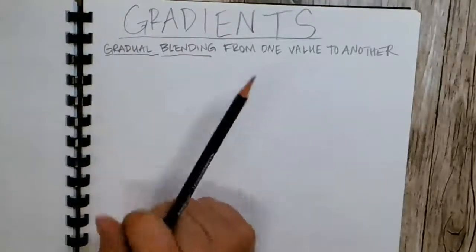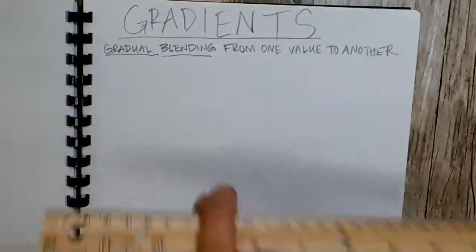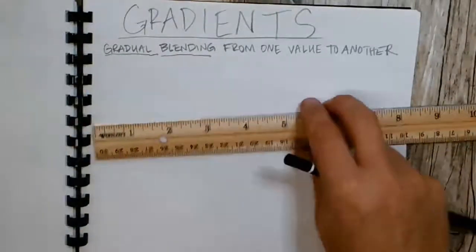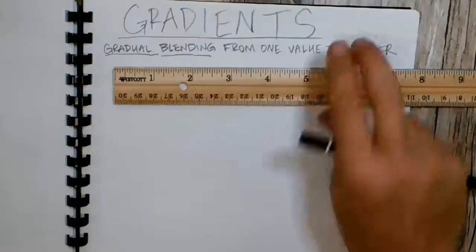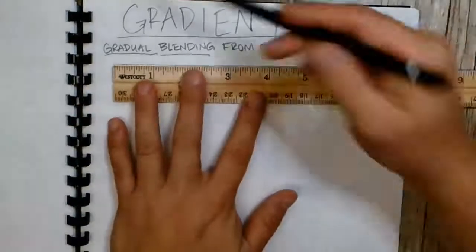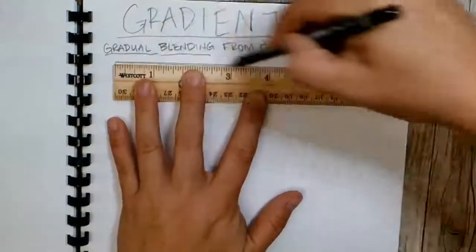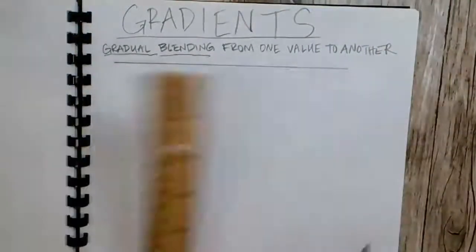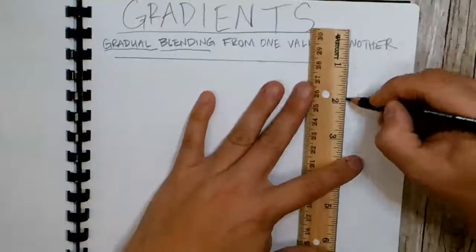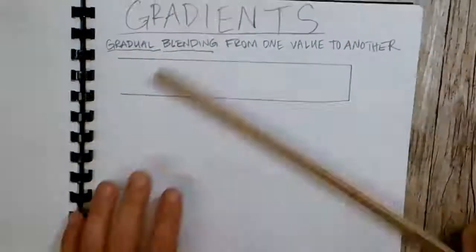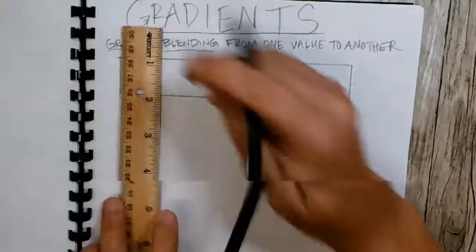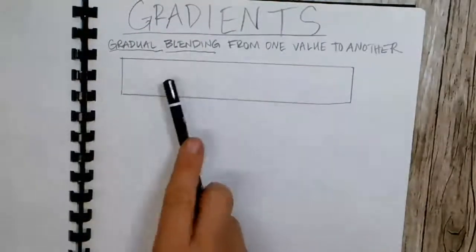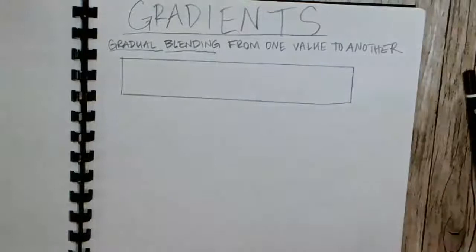So the first thing that you need to do is draw that same box. And remember, it was six inches long and one inch tall. But this time we are not having the little marks every inch. So go ahead and do that.